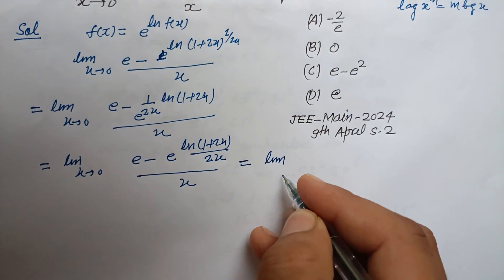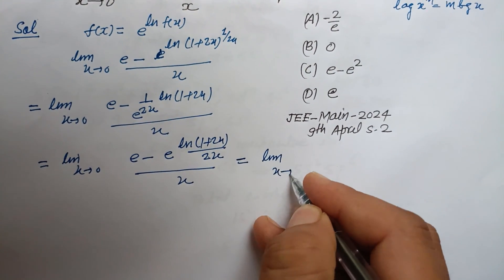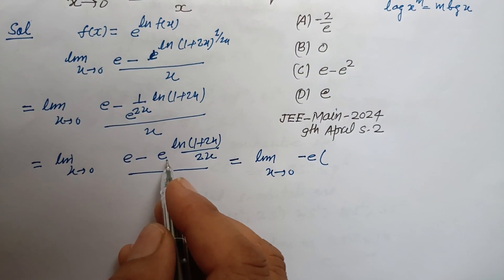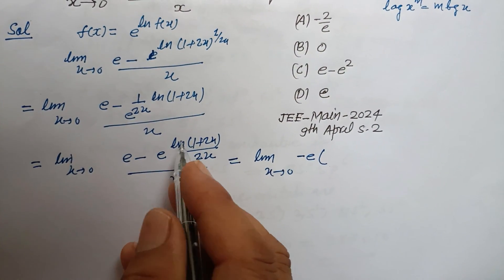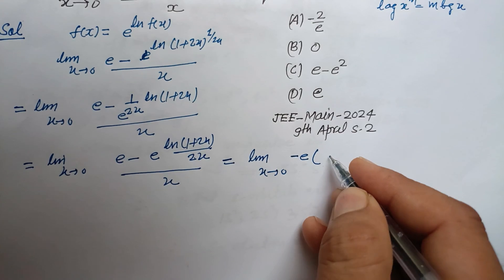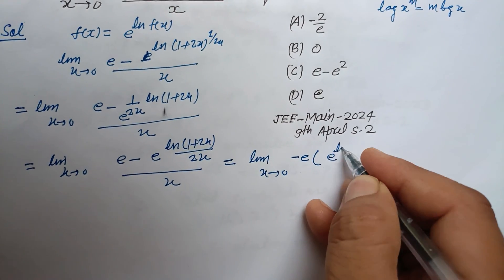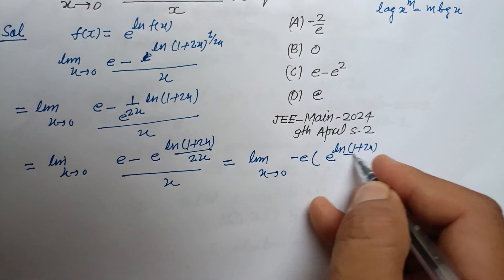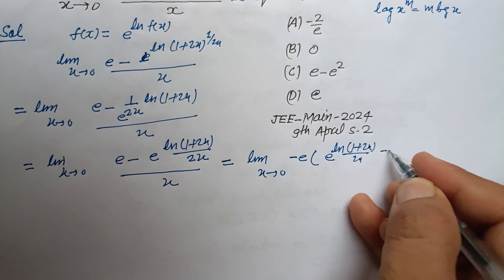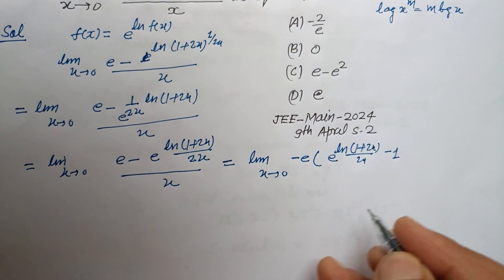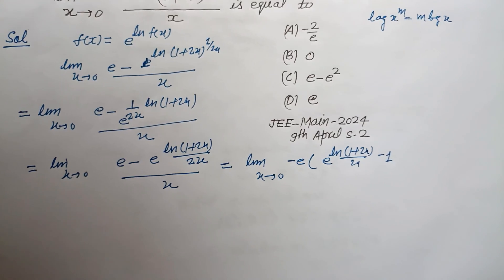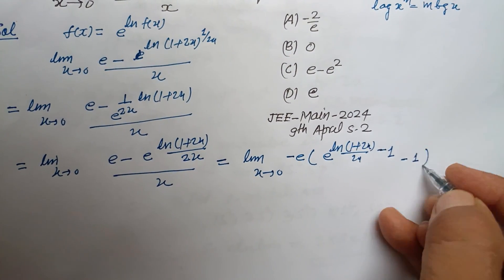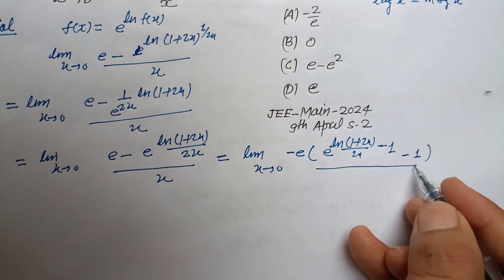Now we take e as common. So the expression becomes limit as x tends to 0 of e raised to the power [ln(1+2x)/(2x) - 1], all divided by x.